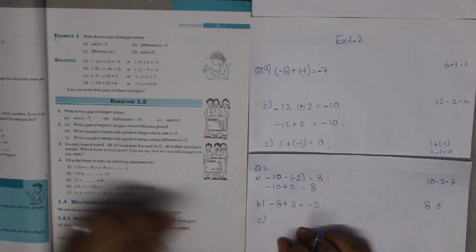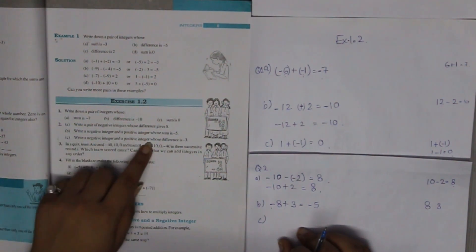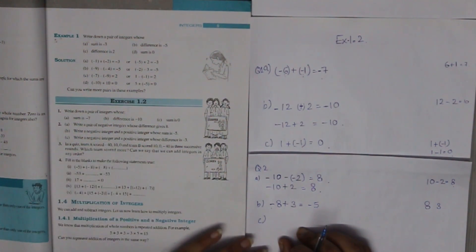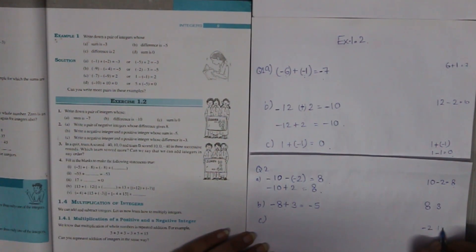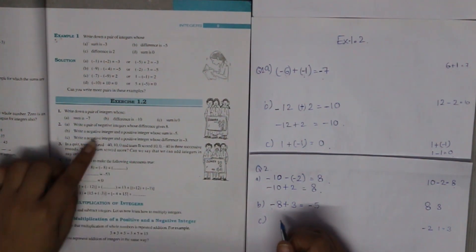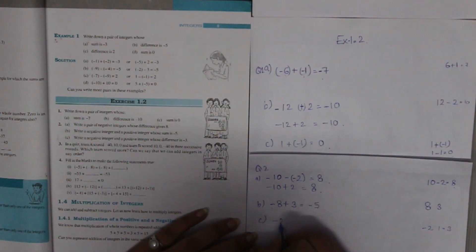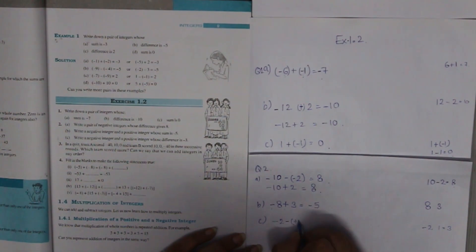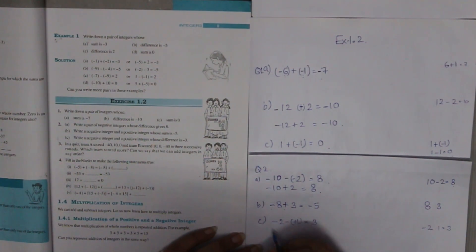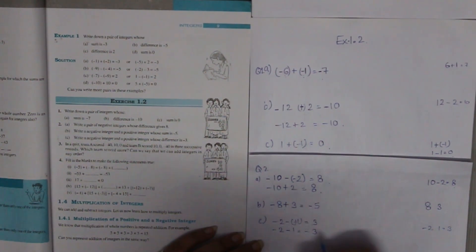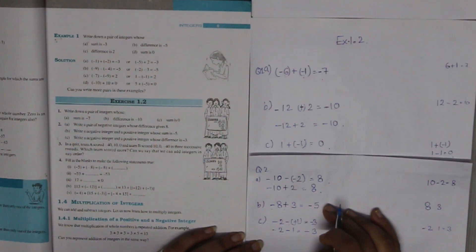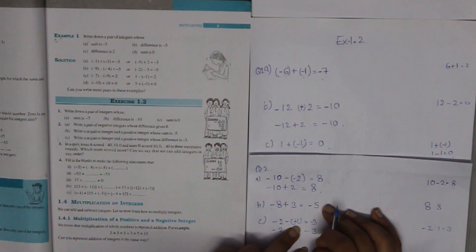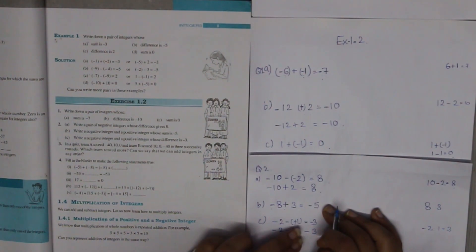Part C: Write a negative integer and a positive integer whose difference is minus 3. Taking minus 2 and 1: minus 2 minus plus 1 equals minus 3. So one negative integer and one positive integer whose difference is minus 3 — the numbers are minus 2 and plus 1.